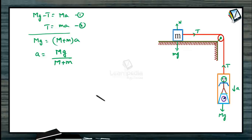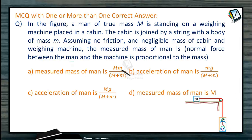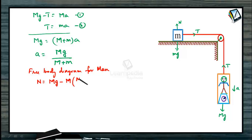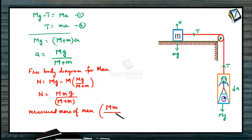Now what do we need to calculate? Just look at the options and work it out. Once we know the options, we can see what are the correct options and what is the measured value. Measured mass of man is capital M times small m divided by M plus small m. Free body diagram for man gives: N equals capital Mg minus capital M into acceleration, where acceleration is capital Mg divided by capital M plus small m. So normal reaction N equals capital M times small m times g divided by capital M plus small m. Measured mass of the man will be capital M times small m by capital M plus small m.